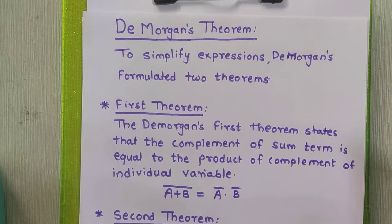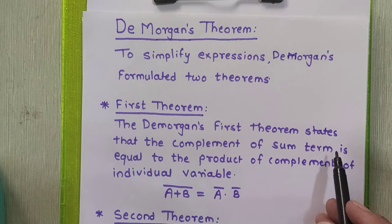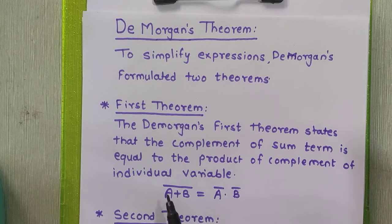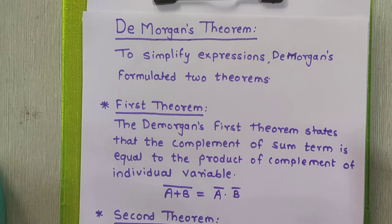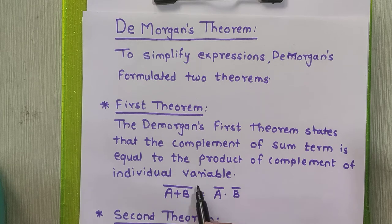The first theorem — De Morgan's first theorem states that the complement of a sum term is equal to the product of the individual complements. It is represented by this example: A plus B, the whole complement, is equal to A complement into B complement.